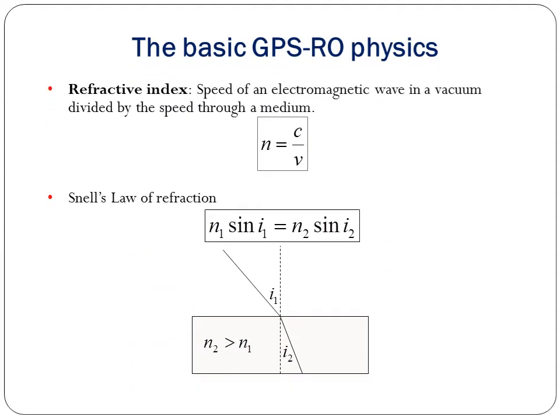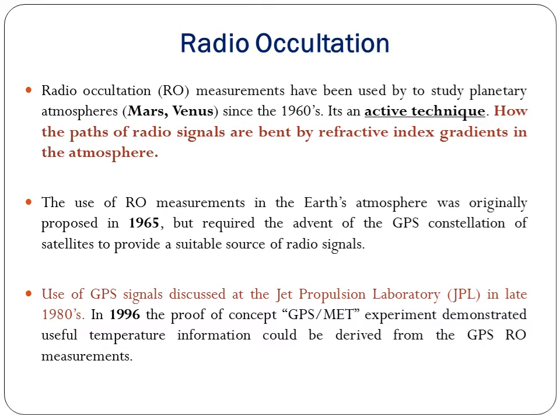The basic GPS radio occultation physics is based upon the refractive index, where the speed of an electromagnetic wave in a vacuum divided by the speed through the medium gives n equals c over v. It also follows Snell's law of refraction: n1 sin i1 equals n2 sin i2, where i1 is the incident angle, i2 is the refracted angle, and the medium has refractive index n2 greater than n1. Radio occultation has been used to study planetary atmospheres such as Mars and Venus since the 1960s, using radio signals bent by refractive index gradients in the atmosphere.